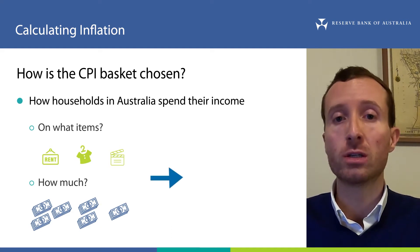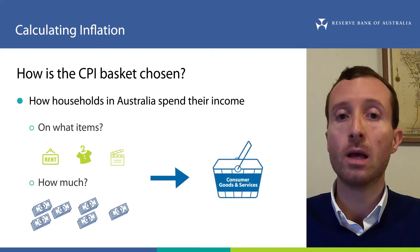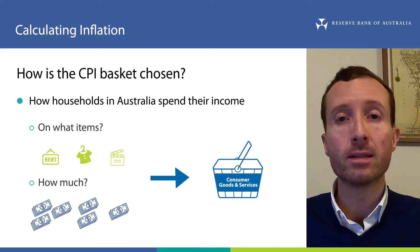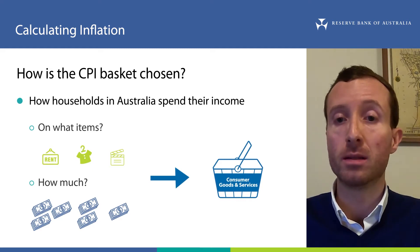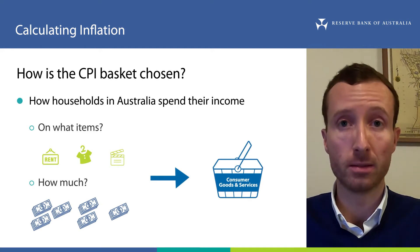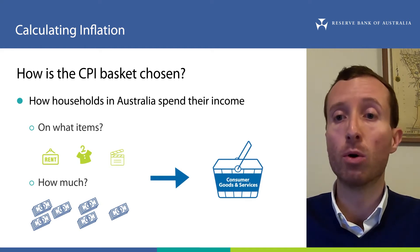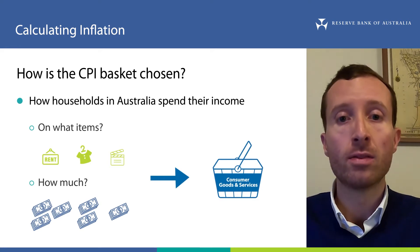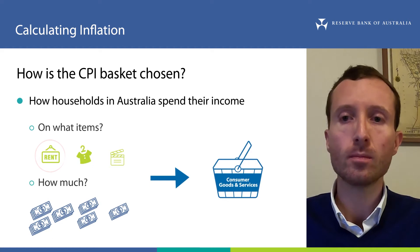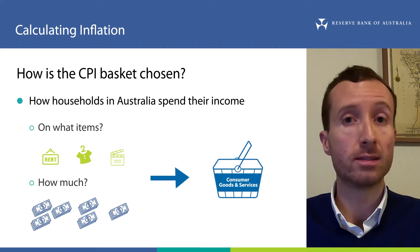Based on this information, the ABS selects the goods and services to include in the basket and what their weight should be. The weight is the importance of each item in the basket, and it reflects the share of household income spent on that item. For example, if households spend more of their income on rents, then rents will have a larger weight in the CPI basket. We will see shortly an example of how these weights are used.